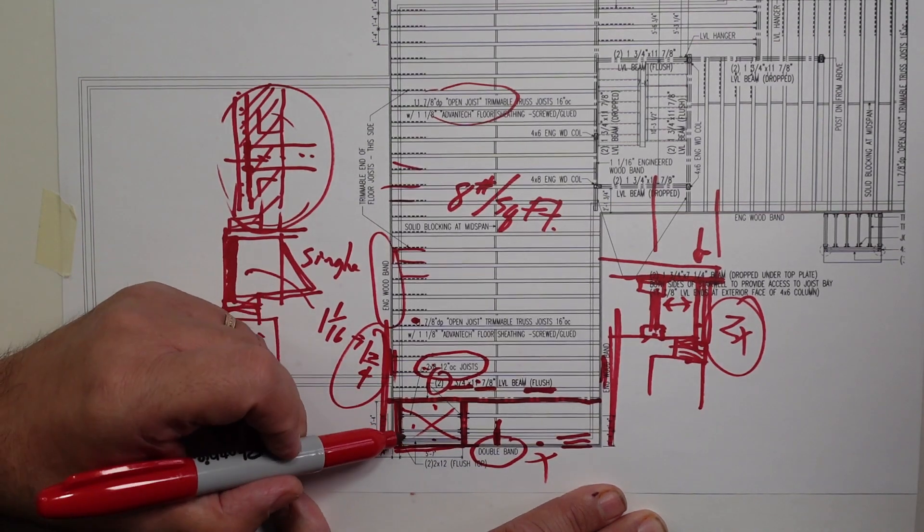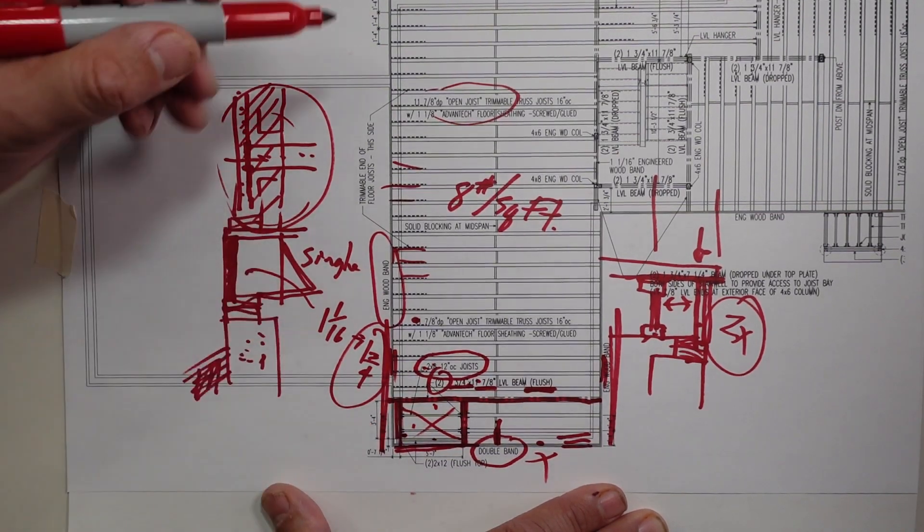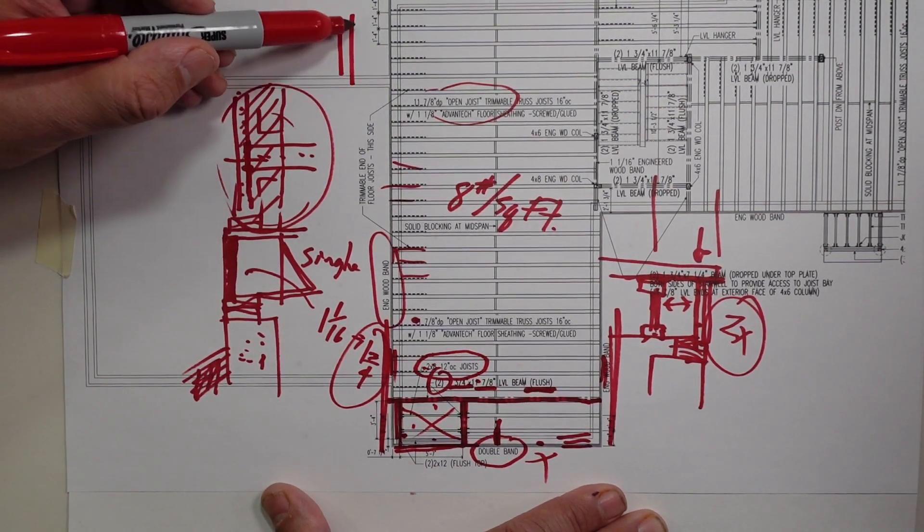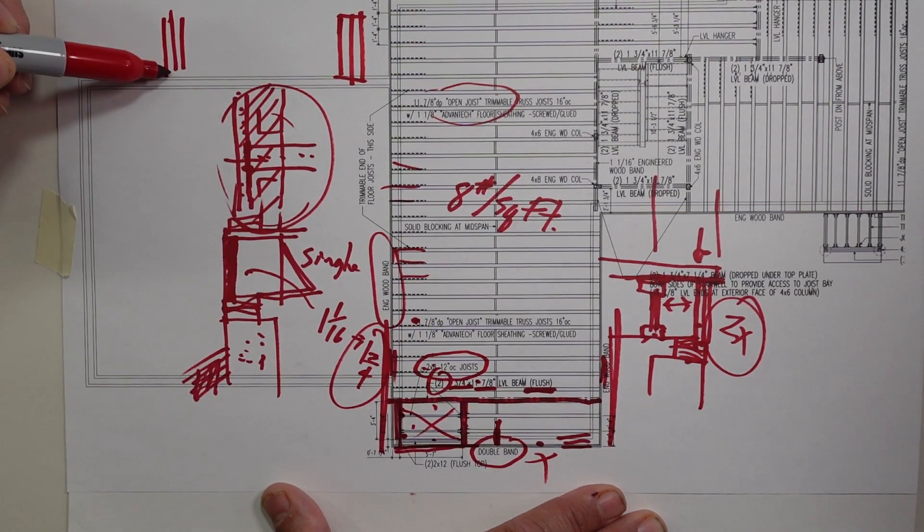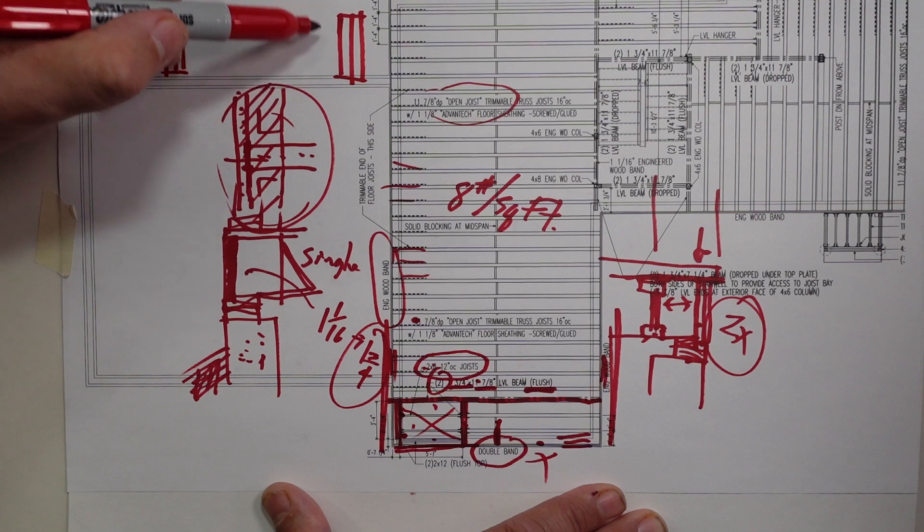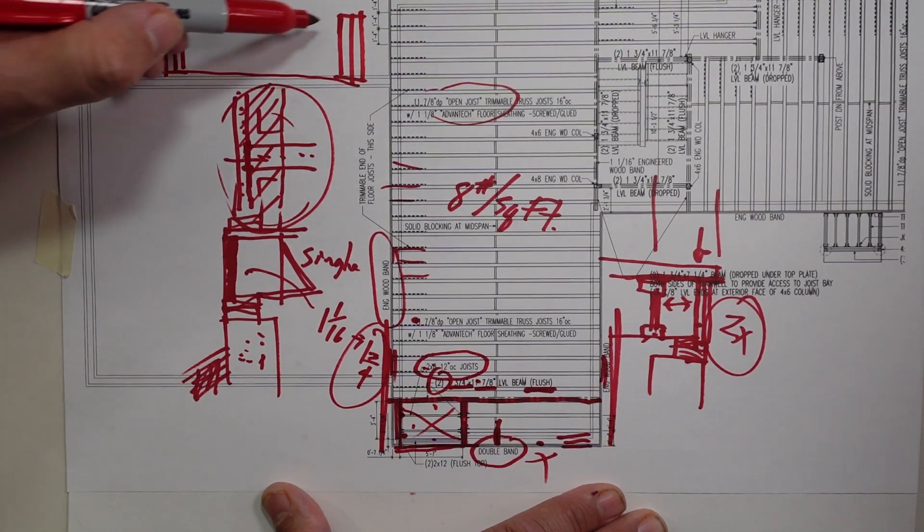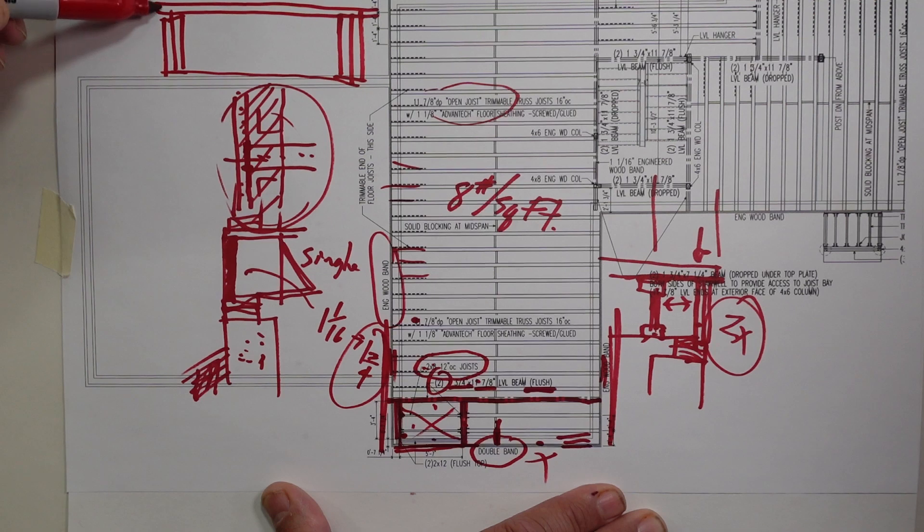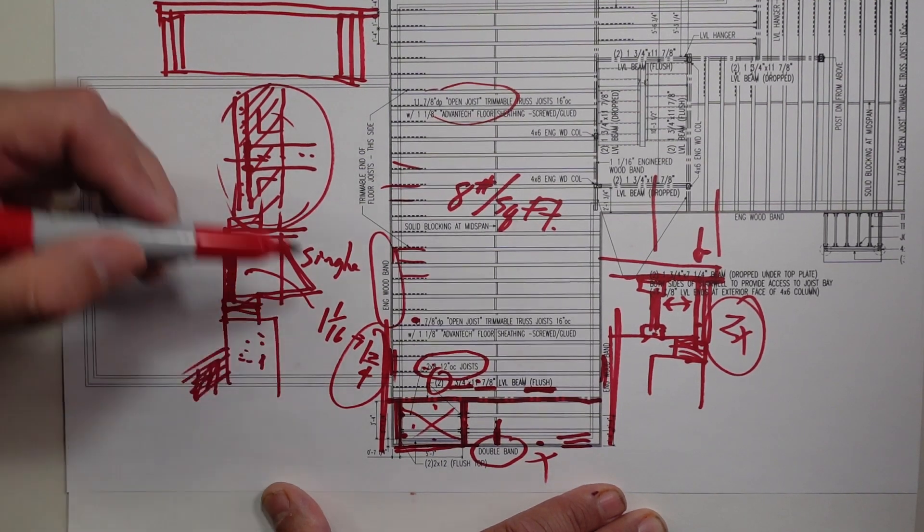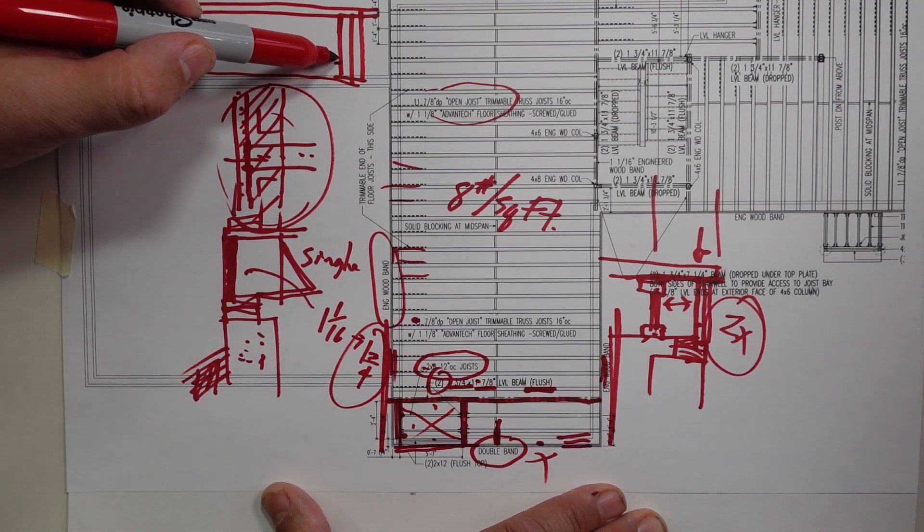And basically what we're doing there is you have that double trimmer here, we have a double trimmer here, and those are 12 inches. And that's where the floor frame is. And then our floor sheathing is going to run over the top of that, right?